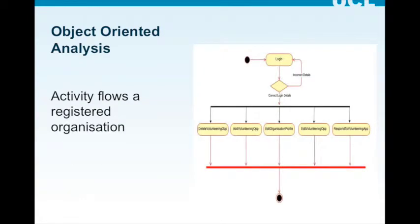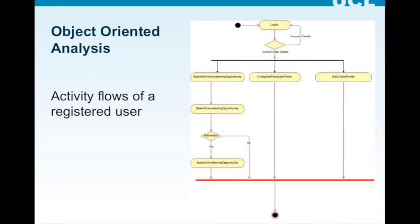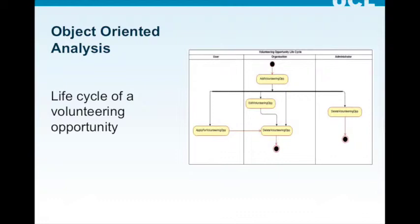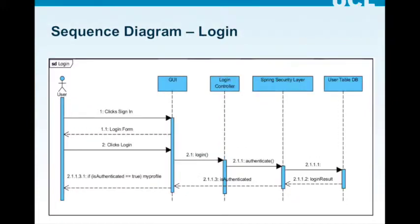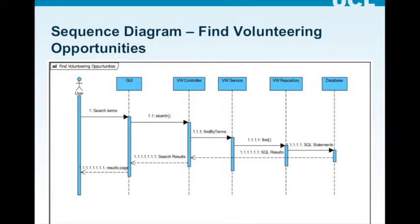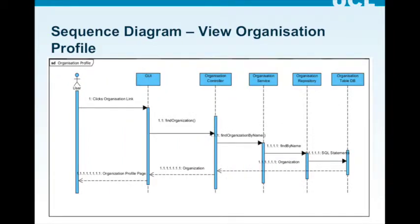This is the diagram for the activity flow of a registered organization. Next, this is the activity flow of a registered user. This is the life cycle of a volunteering opportunity. Following are some of the sequence diagrams for the application: first, user registration; next, login; next, find volunteering opportunities; and lastly, view organization profile.